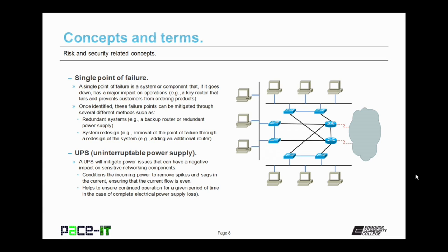You should also be familiar with Uninterruptible Power Supplies, or UPS. A UPS will mitigate power issues that can have a negative impact on sensitive networking components. It conditions the incoming power to remove spikes and sags in the current, helping to ensure that the flow of current is even and consistent, which is very beneficial to your electronic and networking components. They also help to ensure continued operation, at least for a given period of time, in the case of complete electrical power loss. Depending upon your UPS, you may be able to run for minutes, hours, or possibly days if you have a generator.